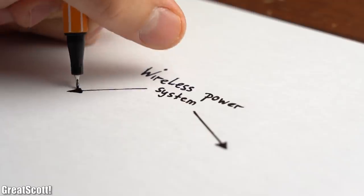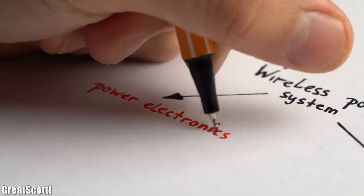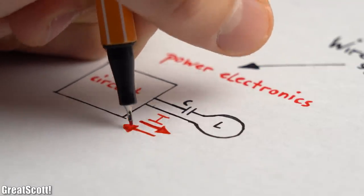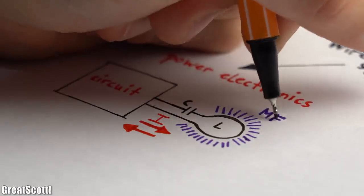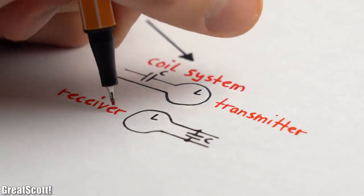First off, there are two big parts that make up a wireless power system. There is for one the power electronics, which let an alternating current flow through the primary coil in order to create the magnetic field, and then there is the transmitter and receiver coil system.